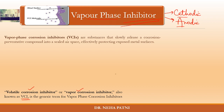VCI are obviously volatile — that is why the V is equivalent to volatile. Vapor phase corrosion inhibitors are substances that inhibit the rate of corrosion reaction, slowing down the corrosion rate. They slowly release a corrosion-preventative compound into the sealed air space, effectively protecting exposed metal surfaces.